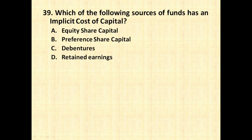The next question: which of the following sources of funds has an implicit cost of capital? Implicit cost is the cost of an opportunity you have foregone — capital that could have been invested elsewhere for more returns. Among the options, retained earnings are the source of capital that has an implicit cost, because if not kept in the company, the retained earnings could have been invested elsewhere for extra return.